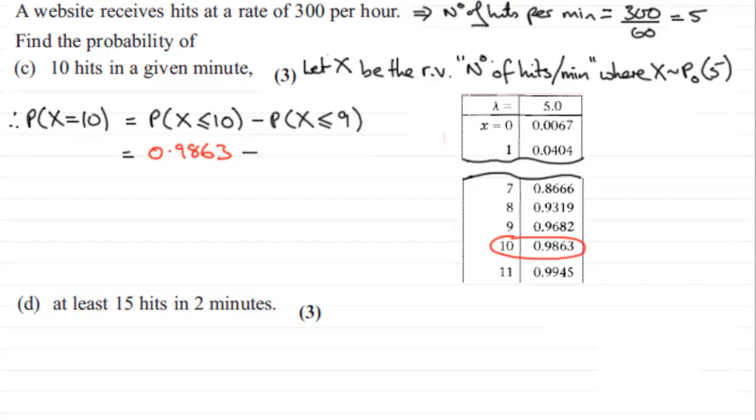And then we subtract probability that X is less than or equal to 9, which is this one in here, 0.9682. And if we just carry out that subtraction, we end up with 0.0181.